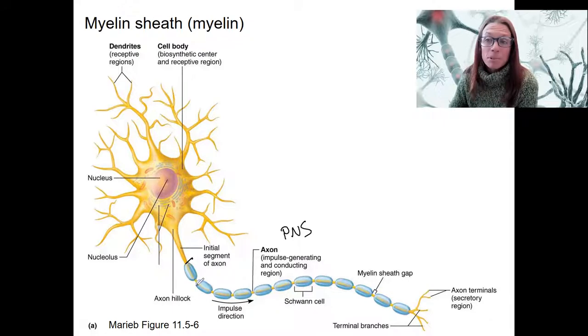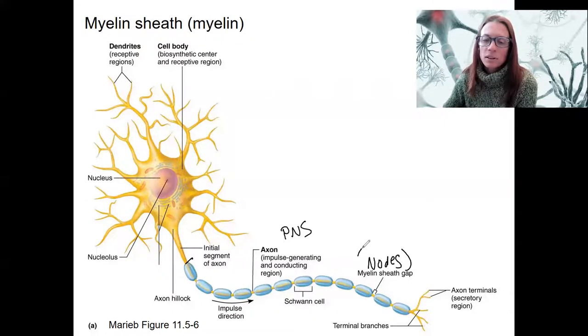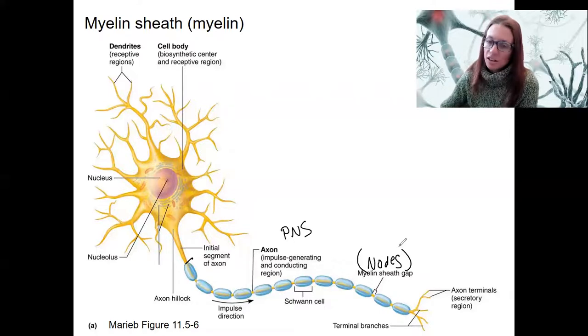And you can see there's gaps in between there, or nodes. So we will see these more in detail. I'll just tell you now, they're called nodes of Ranvier. They're going to be important.